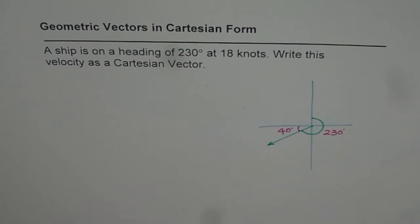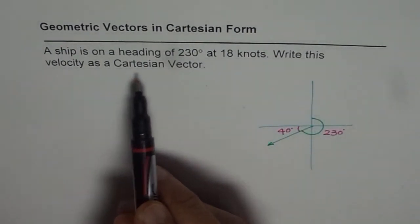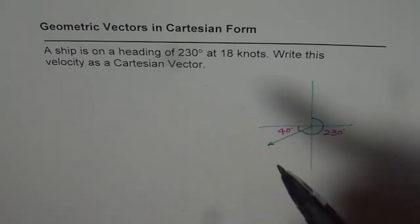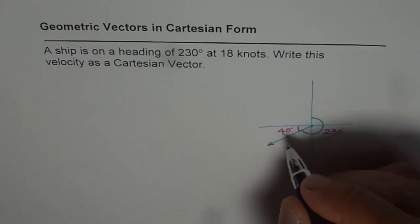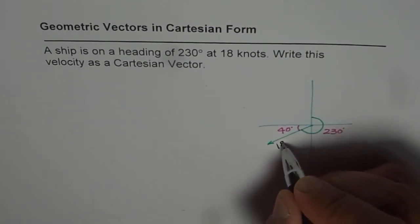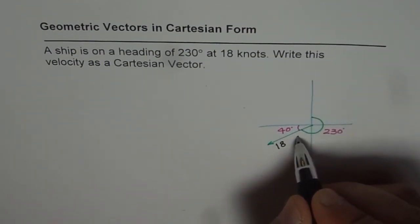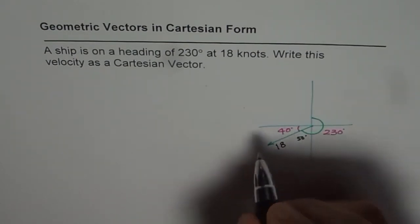Now when we say write this velocity as Cartesian vector, then what we really mean is that the magnitude of this component is 18 knots and it is at a bearing of 230 degrees, which is 180 plus 50. With the horizontal, we have 40 degrees.